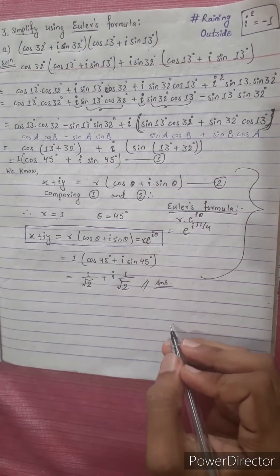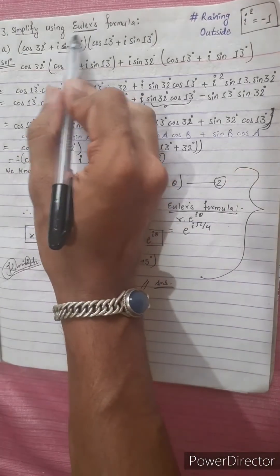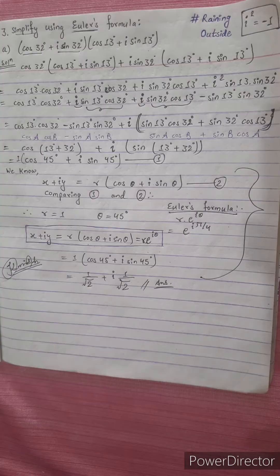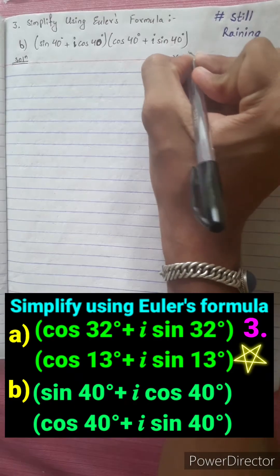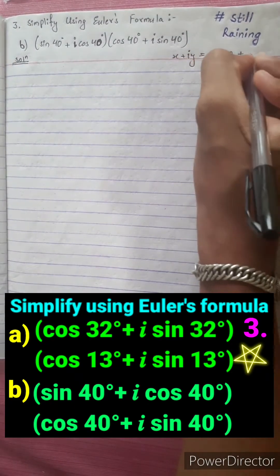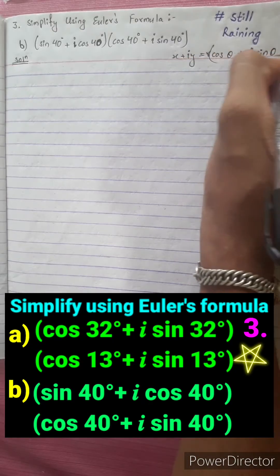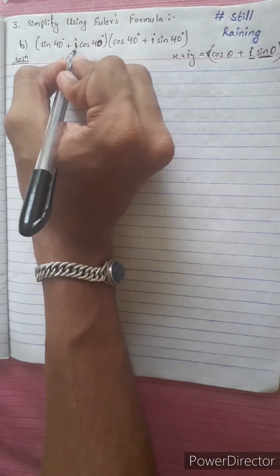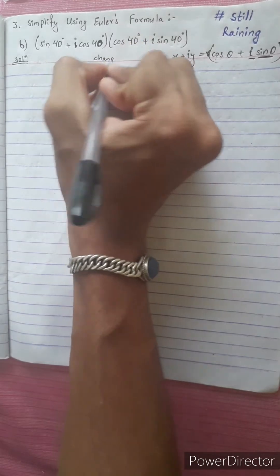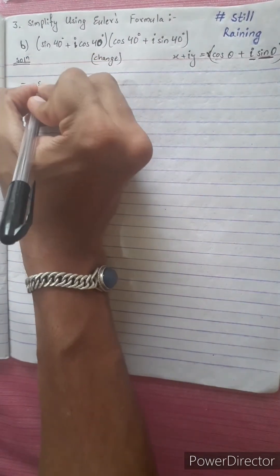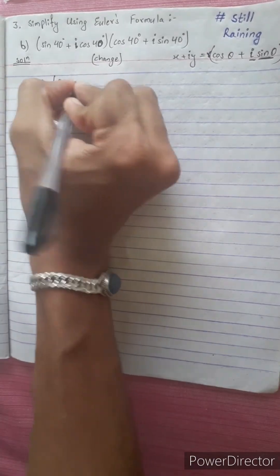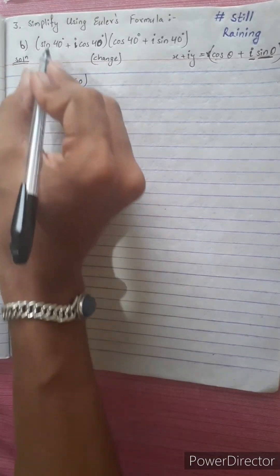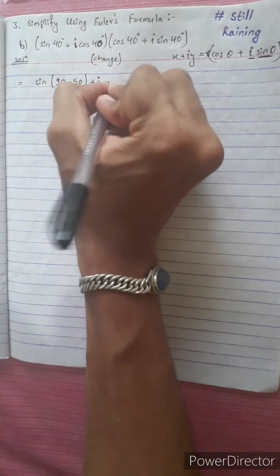The formula is x plus iy equals r(cos theta plus i sin theta). I have sin theta, I have cos theta. I will change: sin theta to cos using the identity. cos 50 plus i cos 50. We add 90 minus 50.